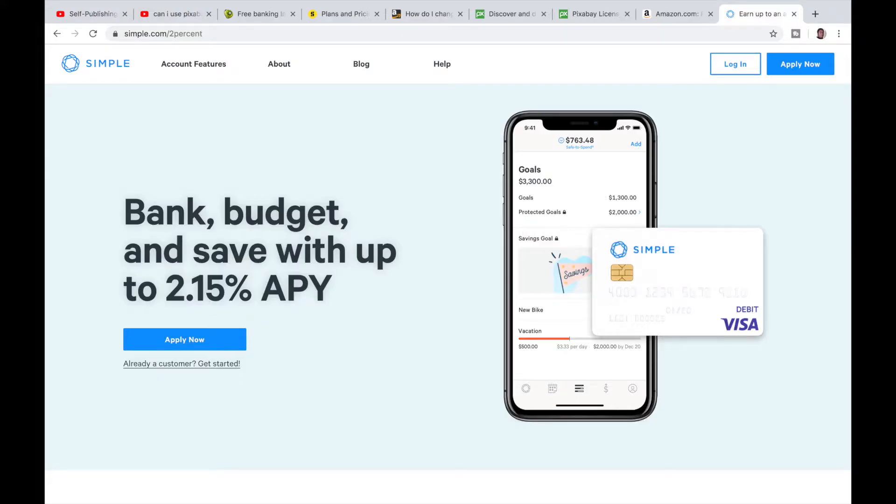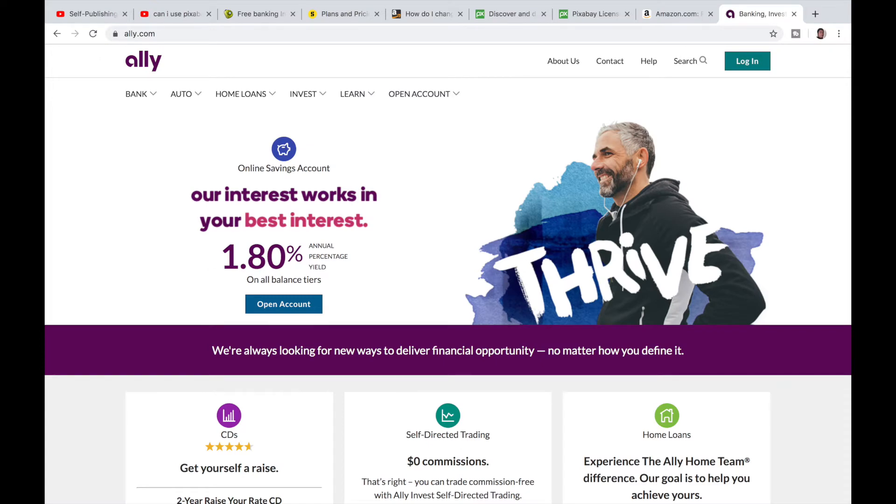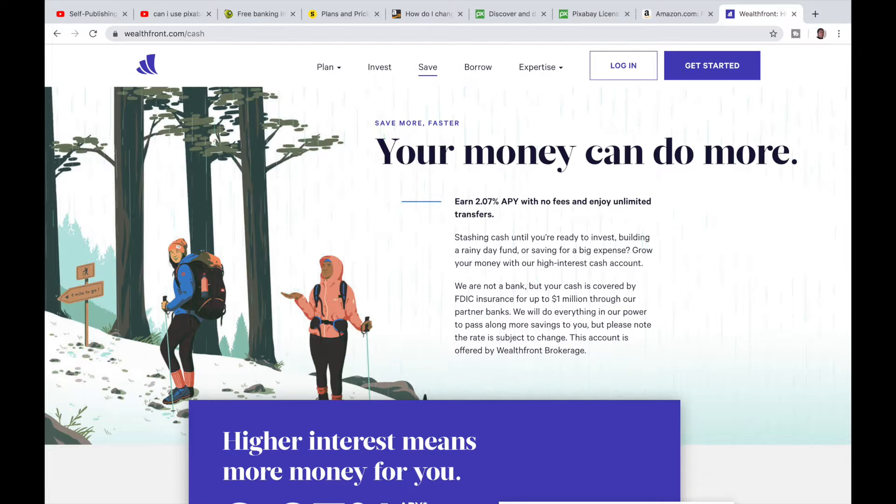This can be accomplished by putting your money in some type of retirement account like a Roth IRA or just IRA in general, or it can be done simply by putting it in one of these online banks with a yield that is higher than two percent. So a good example of this would be Simple Bank, Ally Bank used to be one of them but they lowered it so I can't recommend that, but Wealthfront, Varo—these are a few online banks that could serve as inflation savings.